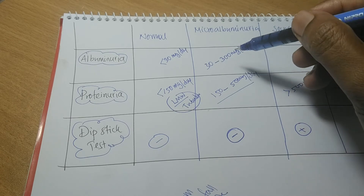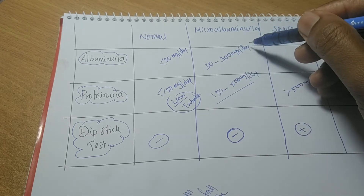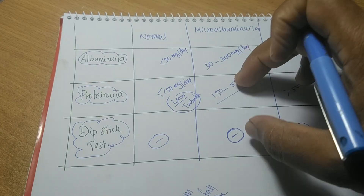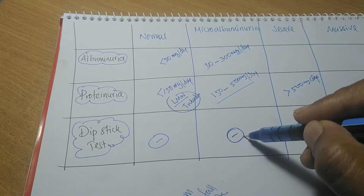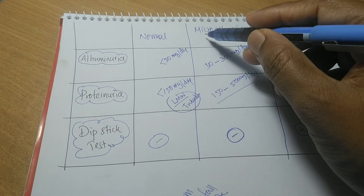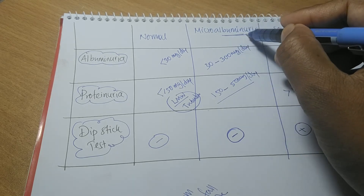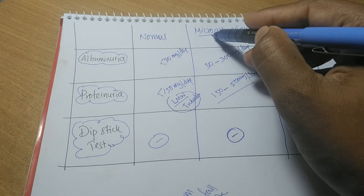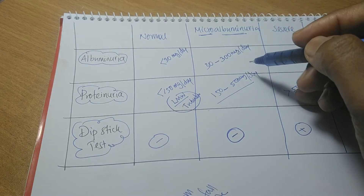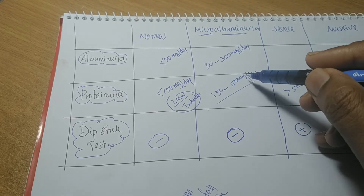Since the term albuminuria has greater clinical importance, identifying microalbuminuria in a patient — most importantly in a diabetic patient — is very important. At this stage of microalbuminuria, the dipstick test is negative, but the patient already has albuminuria. Here, 'micro' means a low amount — a low amount of high molecular weight albumin passing through the urine. So microalbuminuria is when the dipstick test is negative and total protein is less than 500 mg per day.